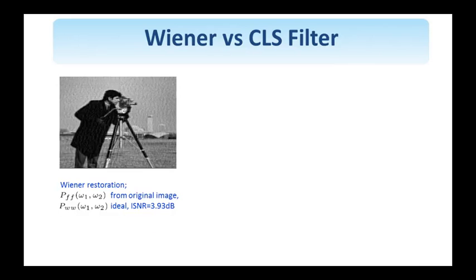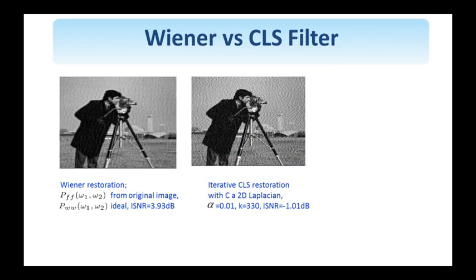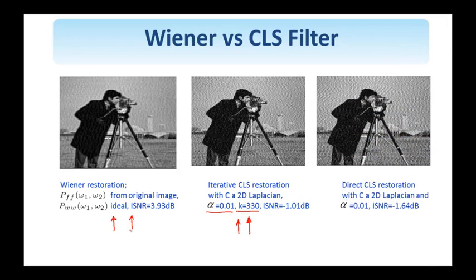We compare the Wiener restoration result with the restored image obtained by the iterative CLS filter, shown after 330 iterations with parameter alpha. As argued from the frequency response, this restored image is noisier than the Wiener restoration — and this is indeed the case by comparing the two images. Noise amplification is traded for sharpness, so this image is sharper than the Wiener restoration. We also compare with the result of direct CLS restoration, which is even noisier than the iterative version, and in both CLS cases the ISNR is negative.